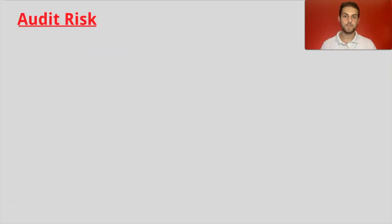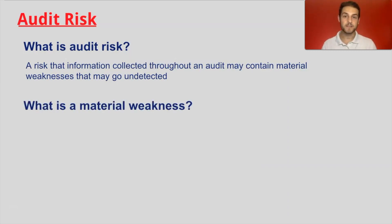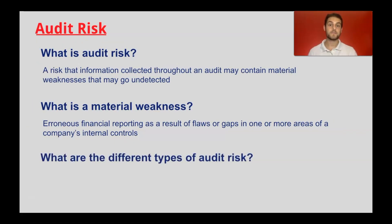What is audit risk? Audit risk is the risk that information collected throughout an audit may contain material weaknesses that may go undetected. A material weakness is classified by erroneous financial reporting as a result of flaws or gaps in one or more areas of a company's internal controls. The different types of audit risks we're looking at are inherent, residual, control, detection, and overall audit risk.